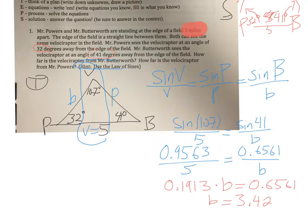And I get that B is equal to 3.42 miles, or 3.43 miles. So that involves both E and P in this process. We did the equation and we solved it.